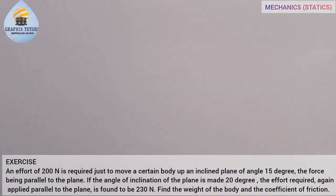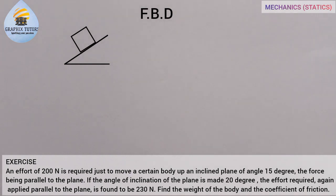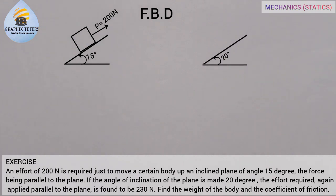In this kind of question, the first thing we are going to do is draw our free body diagram — it's going to assist us. We have two situations here. The first situation is when an effort of 200 Newton is required to move a body up an inclined plane at an angle of 15 degrees, just like you can see on the screen. This is the object moving up the inclined plane with an effort of 200 Newton.